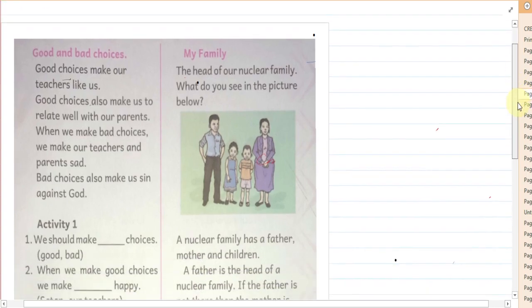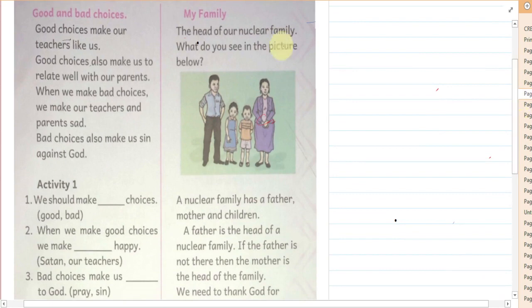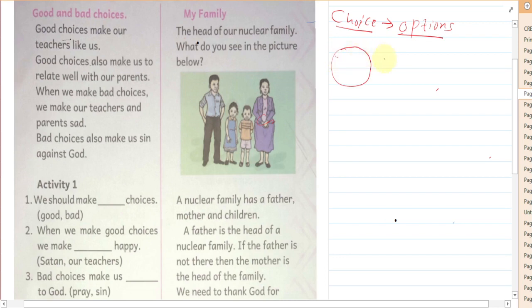Let's look at bad and good choices. When you talk about choices, you want to look at how to make good and bad choices. When you are given two options, that is when you can make a choice. For example, a visitor can come to your home and say, 'I have an orange here and also a mango.' You are told: can you choose what do you want — do you want an orange or a mango?